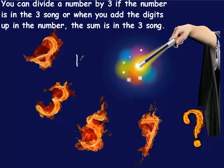Here's an example. Let's say you had the number 123. If you add them up, the digits, you would get 6. And if you sing the 3 song, 3, 6, yep, 6 is in the 3 song, so I know that that number is divisible by 3.